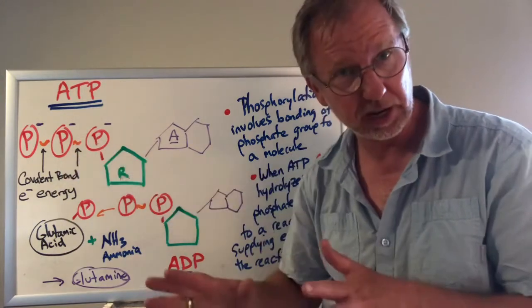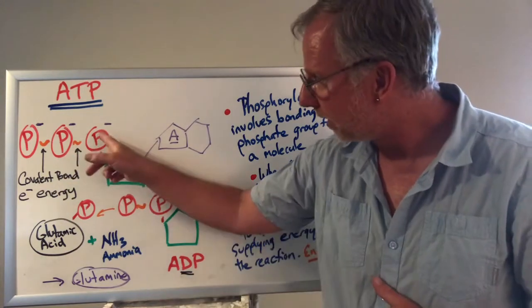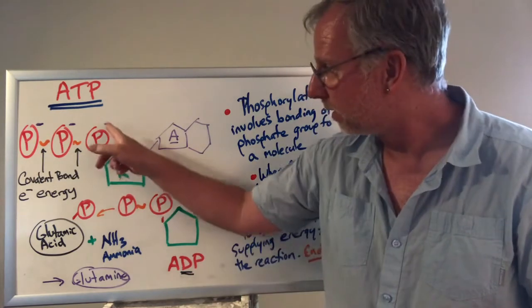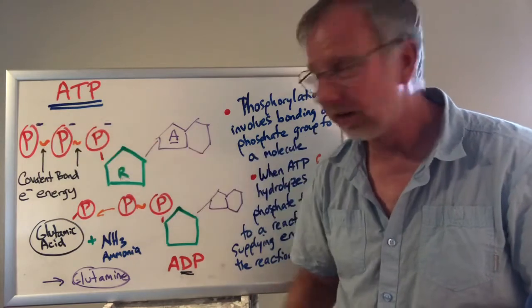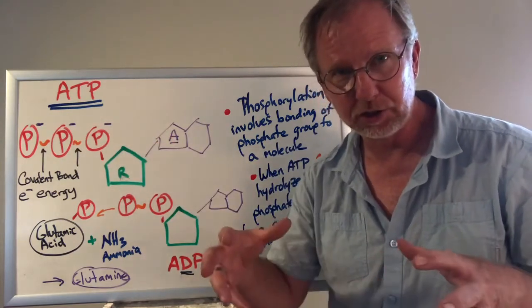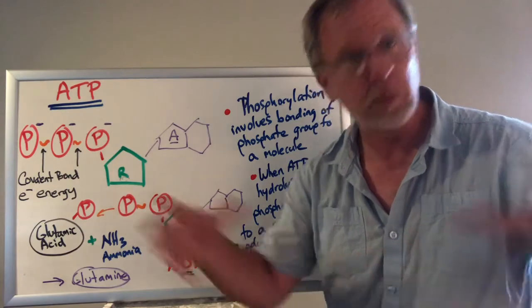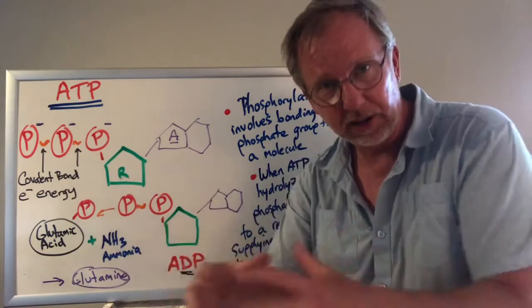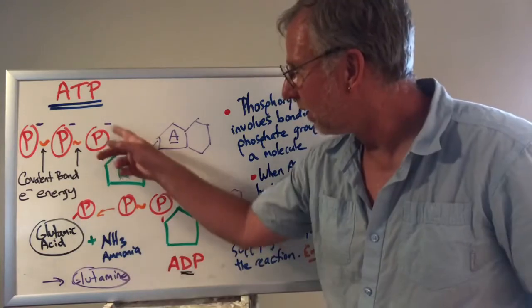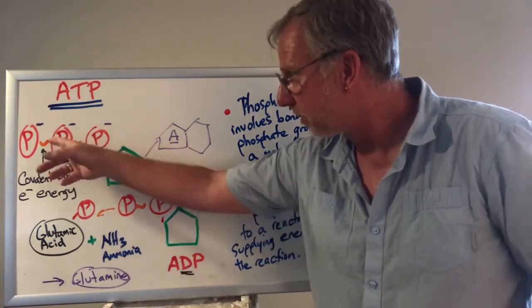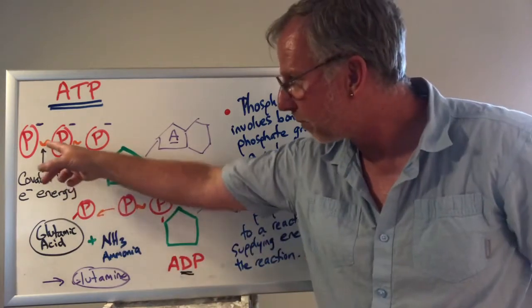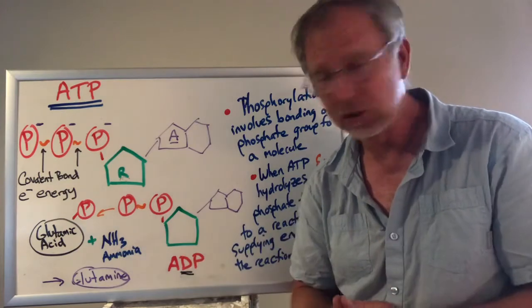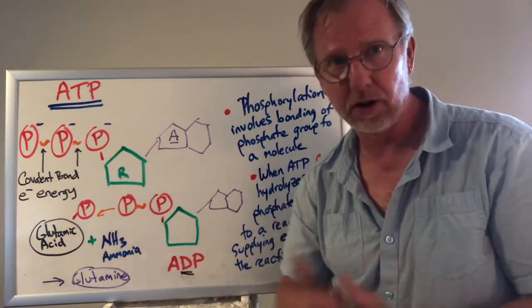What makes those bonds unstable? Each of these phosphate groups has a negative charge. Things with similar charges don't attract — they repel. When you have three phosphate groups all stuck together, all with negative charges, they're pushing away from each other. That makes the bond unstable, which is a good thing — it will readily give up energy for endergonic reactions.